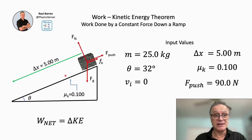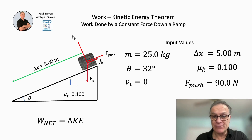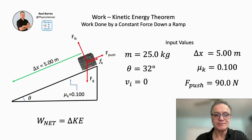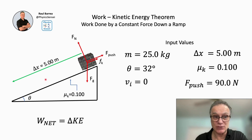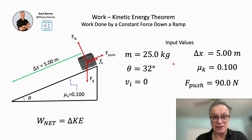Here's the diagram I selected for you — it shows the ramp and the crate with all the forces acting on it. The first force is the gravitational force Fg pointing vertically downward. Next is the normal force, which is perpendicular to the ramp. Then there's the push force F, and also the kinetic friction force. Because the box is sliding down the ramp, the friction force will be pointing up the ramp — that's an important detail.